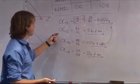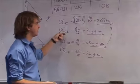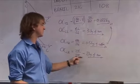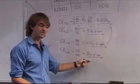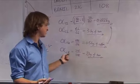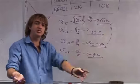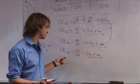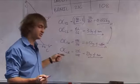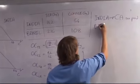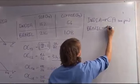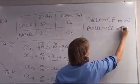Now let's have a look at coffee. The opportunity cost of coffee in India is 3 kilograms of tea, yet the opportunity cost of coffee in Brazil is 2 kilograms of tea. Brazil can make coffee more efficiently because the opportunity cost of coffee in Brazil is lower than the opportunity cost of coffee in India. So Brazil has a comparative advantage in coffee production.